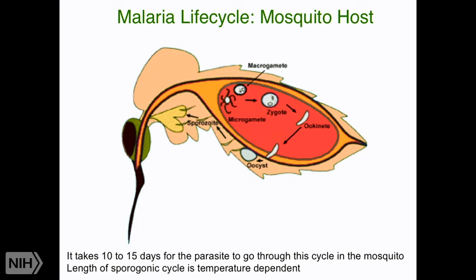A few things are important. From the parasite's point of view, the mosquito is the most important host because it's where sex occurs. This cycle takes optimally 10 to 15 days, so that mosquito must live 10 to 15 days to transmit the disease — that's a long time in a mosquito's life. The length of the cycle is temperature dependent: as the temperature decreases, it takes longer, so that mosquito has to live even longer.